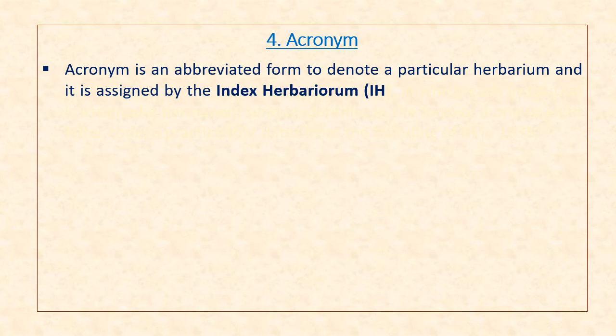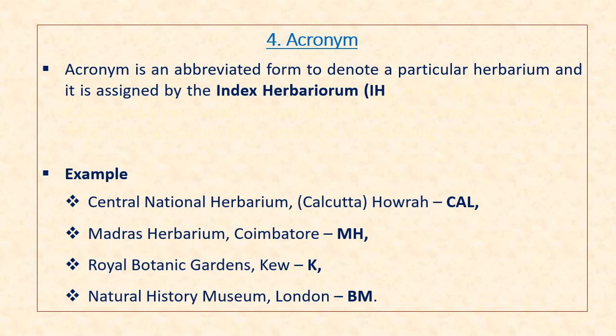Regarding the use of acronyms for different herbaria: an acronym is an abbreviated form to denote a particular herbarium, assigned by Index Herbariorum (IH), in which each institution is assigned a permanent unique identifier in the form of a 1 to 8 letter code — a practice dating from the founding of IH in 1935. Some examples are: Central National Herbarium, Calcutta — CAL; Madras Herbarium, Coimbatore — MH; Royal Botanical Garden, Kew — K; Natural History Museum, London — BM.